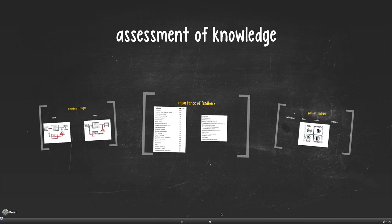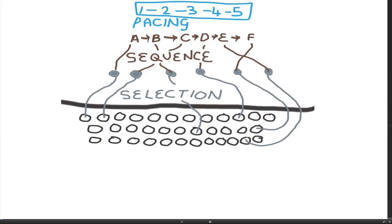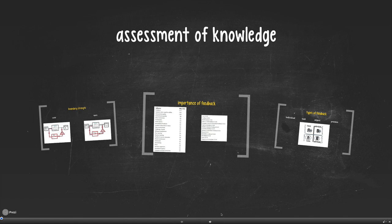The seventh key question we ask ourselves when doing educational analysis has to do with the assessment of knowledge. This follows very logically from the previous three questions. Once you've selected something, sequenced it, and paced it, it's very important to actually check that it's been learnt.